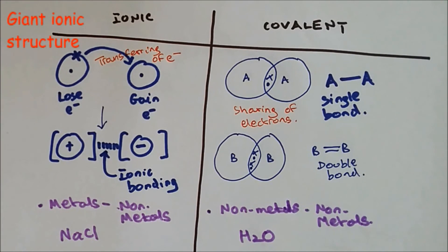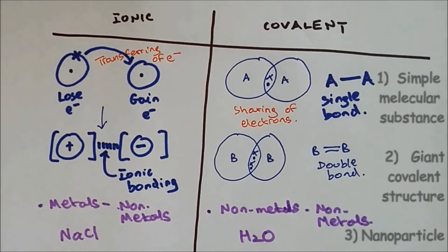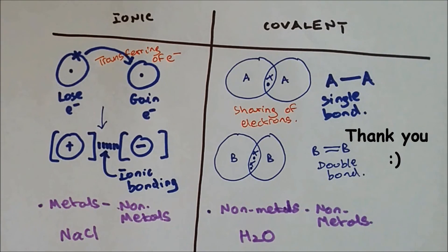Now ionic bonding forms into a giant structure and they are called giant ionic structures, whereas covalent bonding can form into three different structures. These are simple molecular substance, giant covalent structure, and nanoparticles.